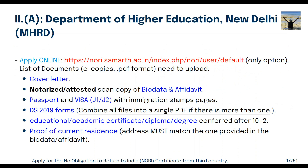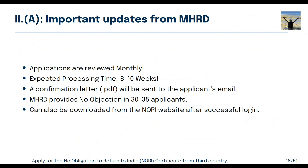Documents required for MHRD clearance include: the notarized and attested copy of biodata and affidavit received from your Indian High Commission — scan and upload each one — passport, visa, DS-2019 form, academic certificates after 10+2, and proof of current address. Your address must match what you provided in your biodata and affidavit. Do not change your address until the waiver process is complete, or it will cause major delays.